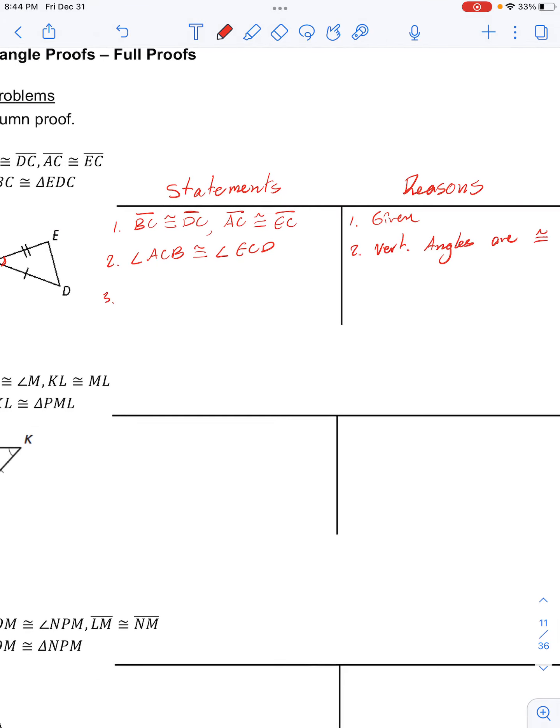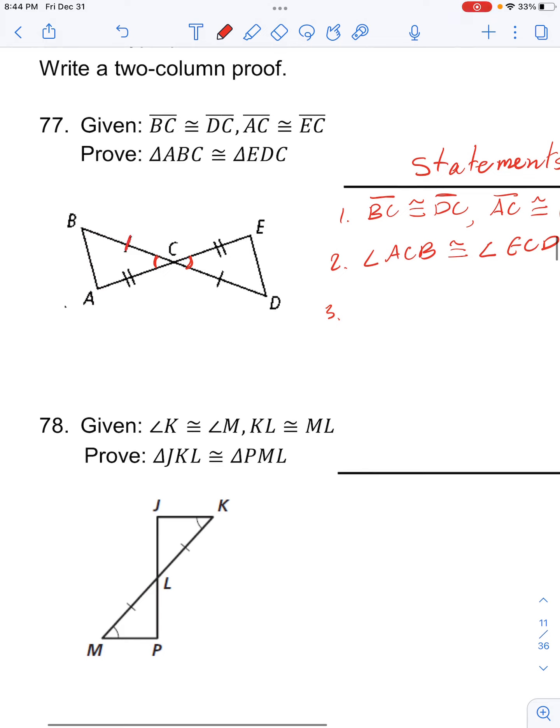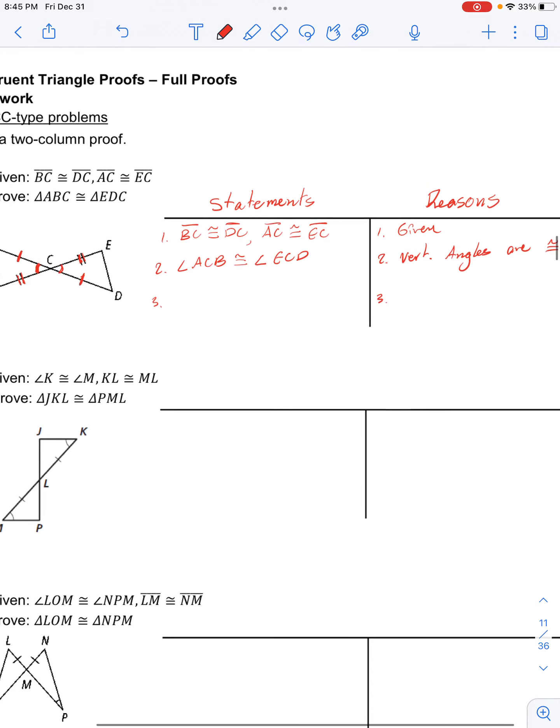And then it would follow that we have one pair of congruent angles followed by congruent—or first we have congruent sides followed by congruent angles followed by congruent sides, so we have an SAS congruence.